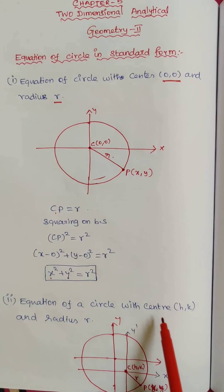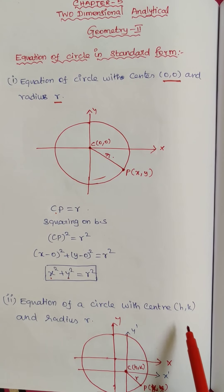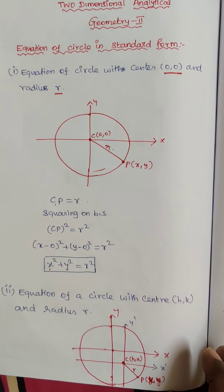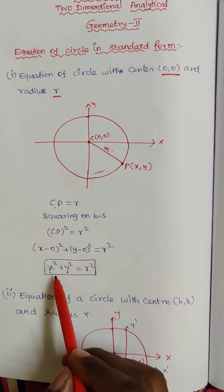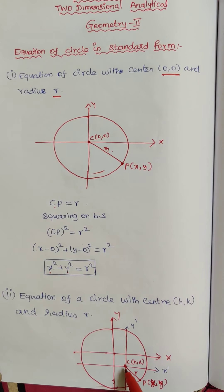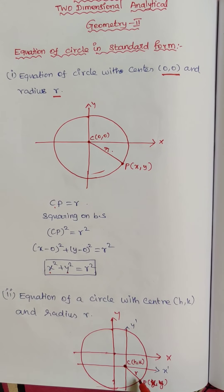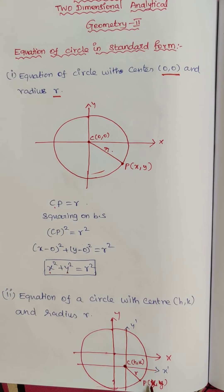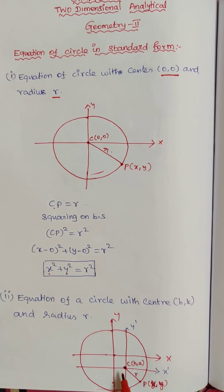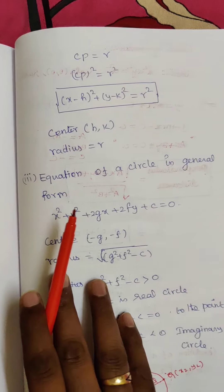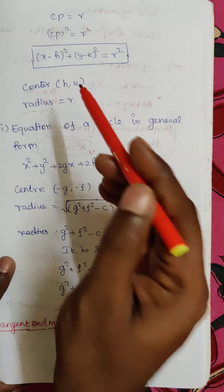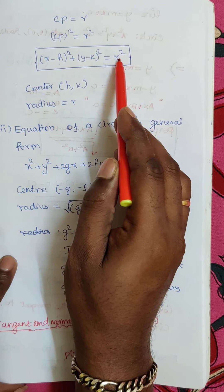Now, equation of a circle with center (h, k) and radius r. When the center is at (0, 0) the equation is x squared plus y squared equals r squared, but now the center is shifted to (h, k). The circle has center C(h, k), a point P(x, y) on the circle, and distance CP = r. Using the distance formula: x minus h squared plus y minus k squared equals r squared.